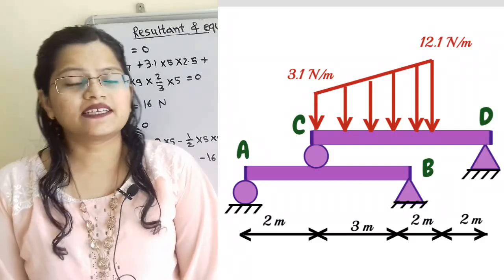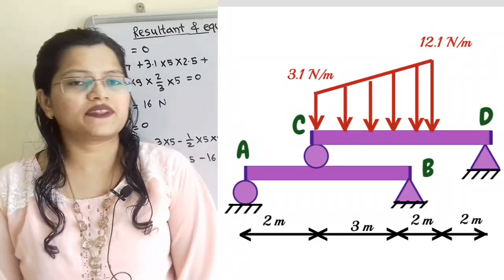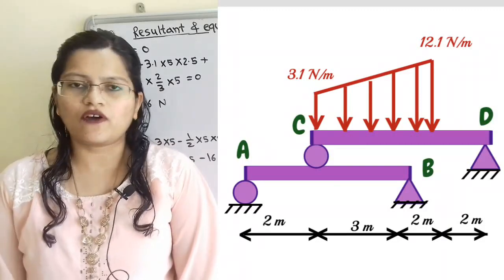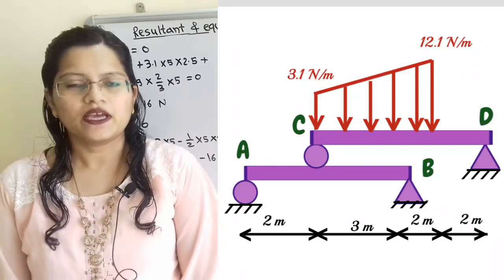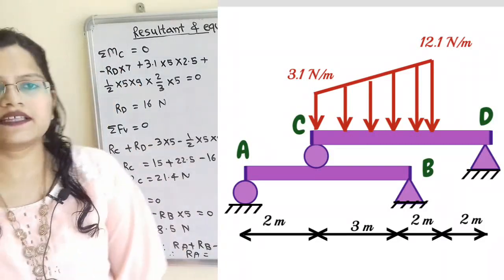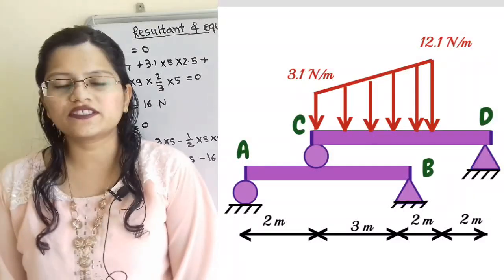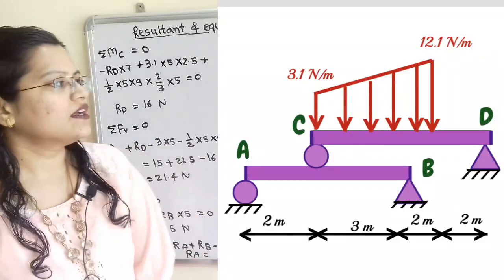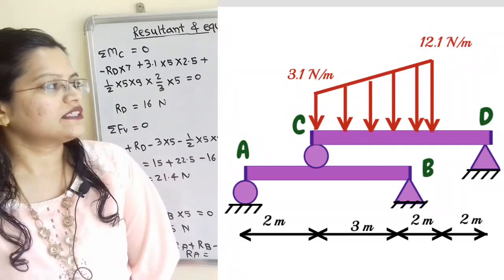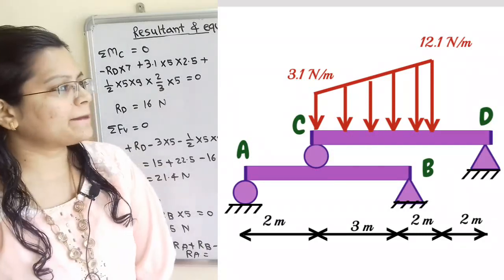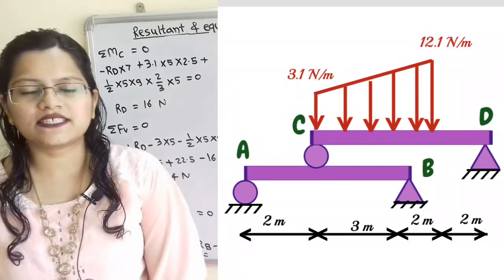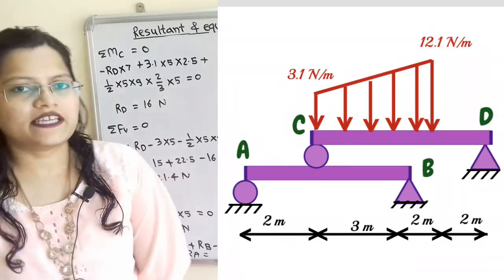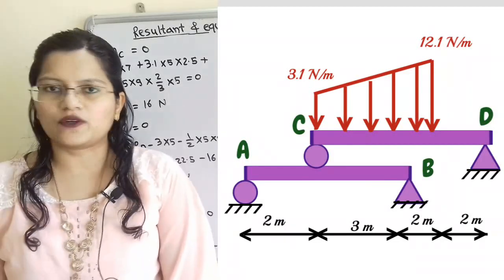Let us understand the given question with the help of a diagram. This is a compound beam problem. At end A, a roller support is given. At point B, a hinged support is given. At point C, both beams AB and CD are in contact with a roller. At point D, a hinged support is given.